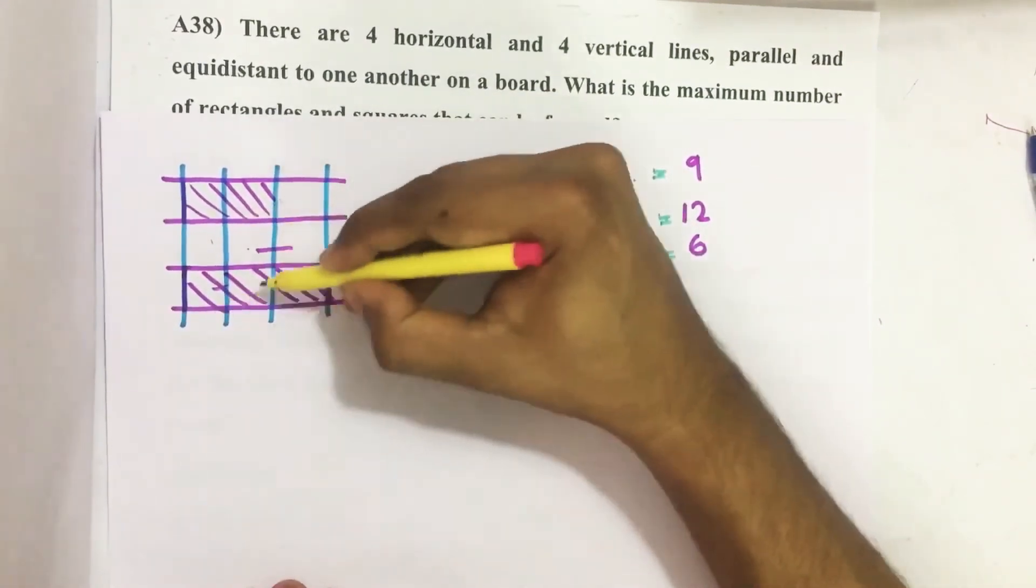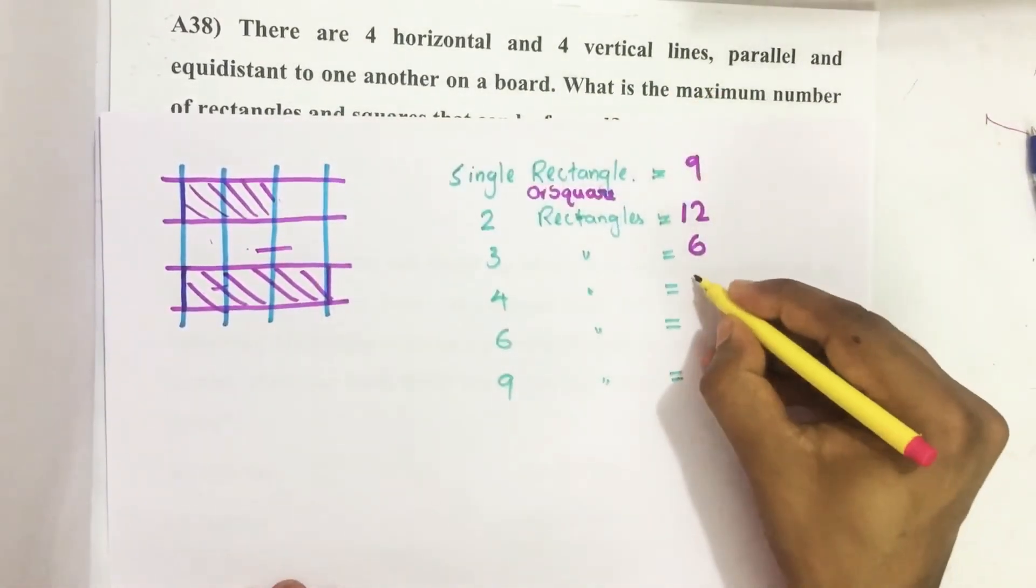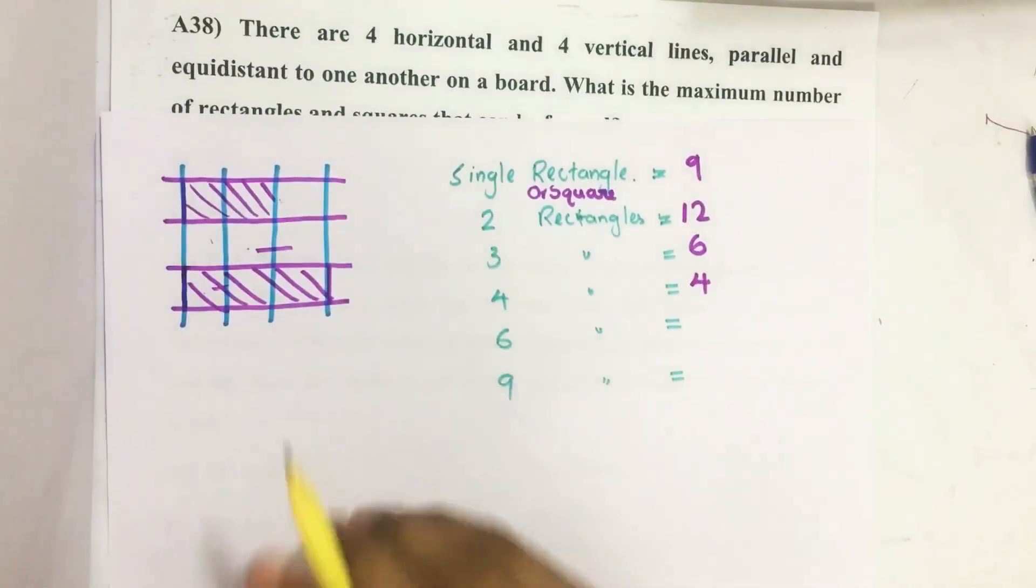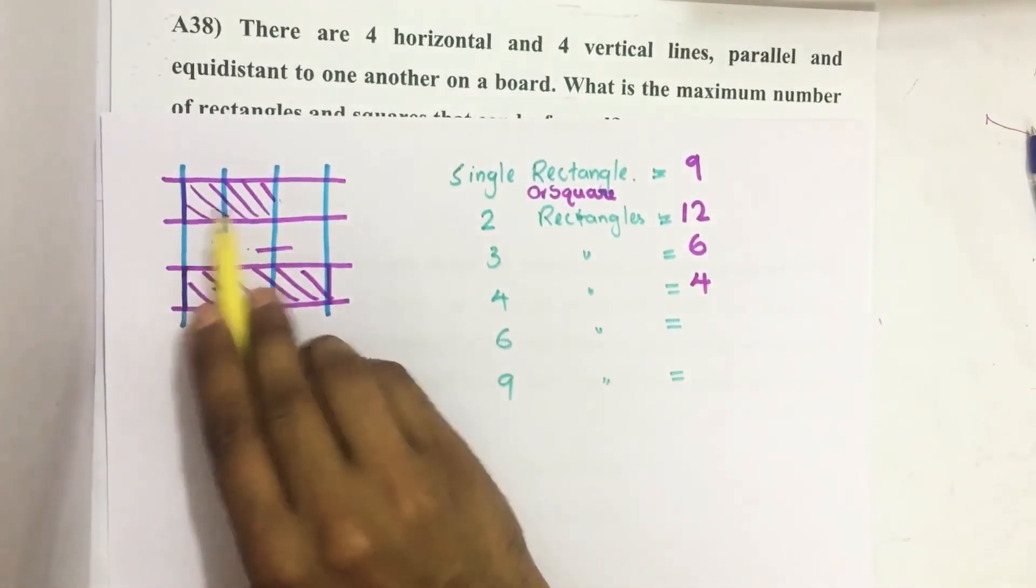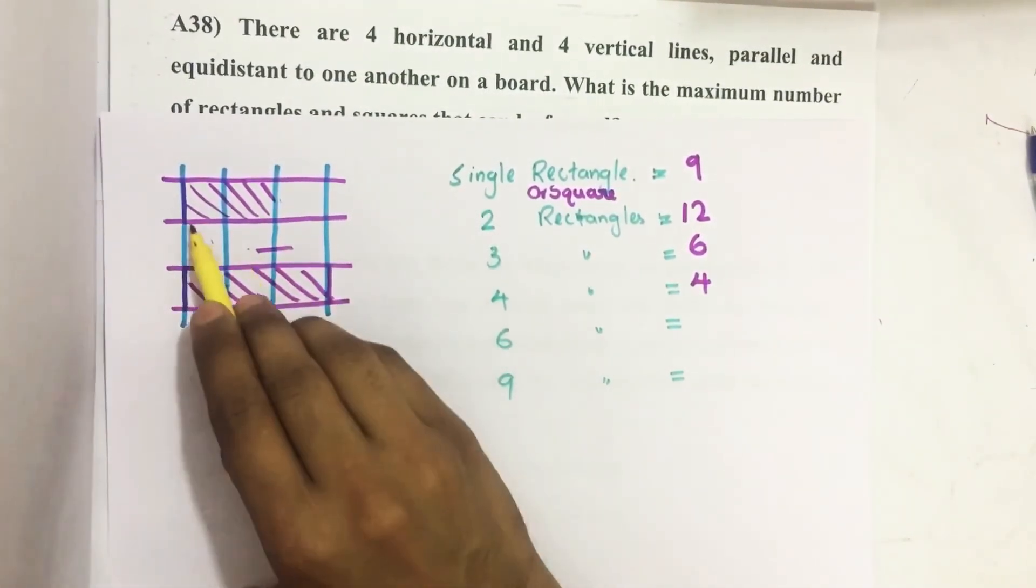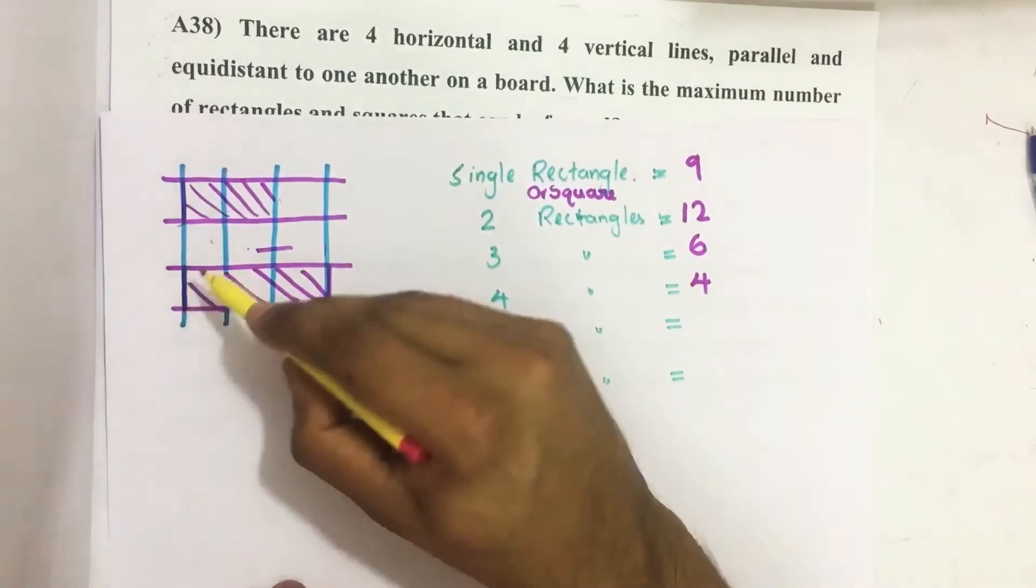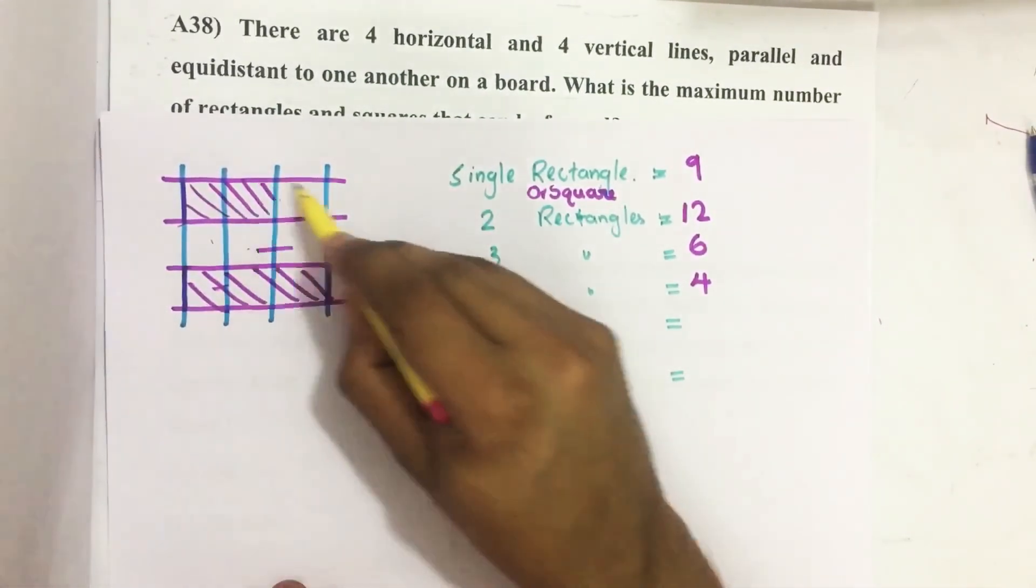Then by joining four small squares: one, two, three, four—four such squares.